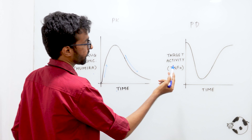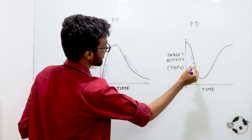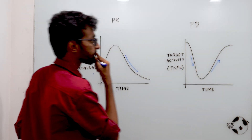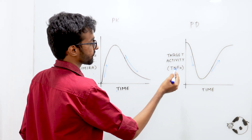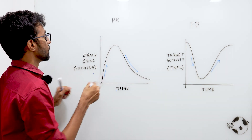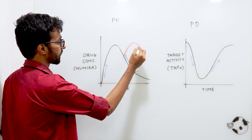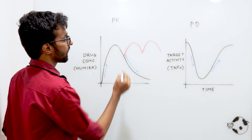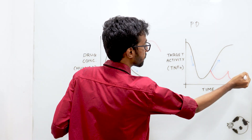Looking at the PD profile: as the drug concentration increases, the target activity is reduced; as the drug is removed from the body, the target activity goes back to normal. In clinic, to achieve efficacy, we need more sustained reduction of target activity over time, which requires multiple dose scenarios. After the first dose, before the concentration goes back to zero, we give a second dose and repeat so that drug concentration is sustained over time, and similarly the target activity remains reduced.